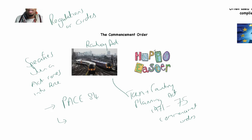A commencement order is a statutory instrument that brings in the whole or a part of the Parent Act. Sometimes there's no limit on the time, and sometimes provisions never get brought in. The Easter Act of 1928 has never been brought in. The idea under the Easter Act was to make sure that Easter fell on the same day every year. That was a bright idea from 1928 that never gained any momentum, and so it has never been brought into power.